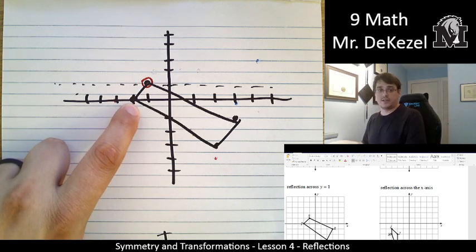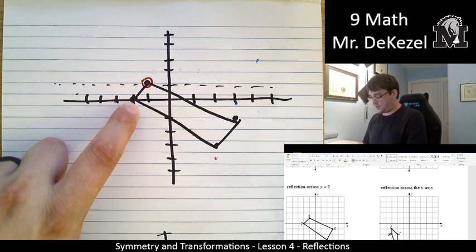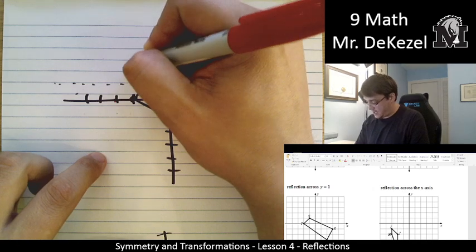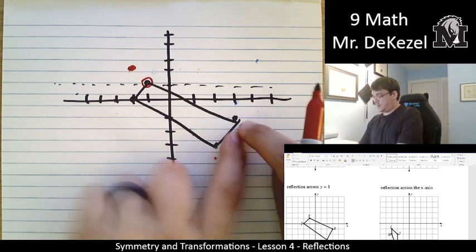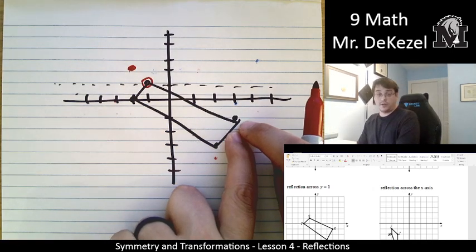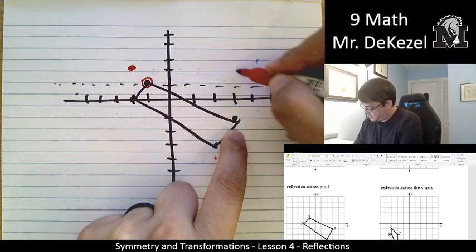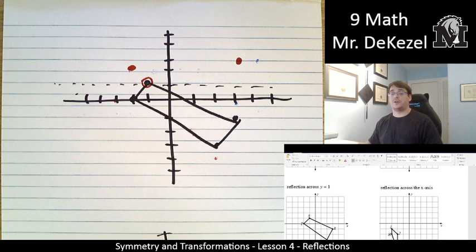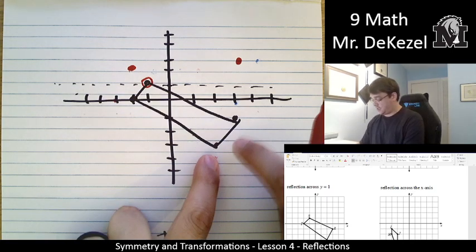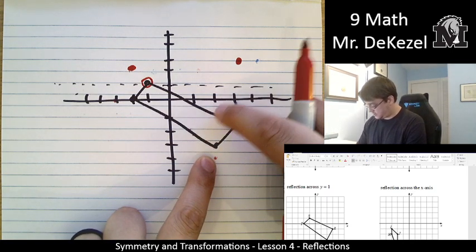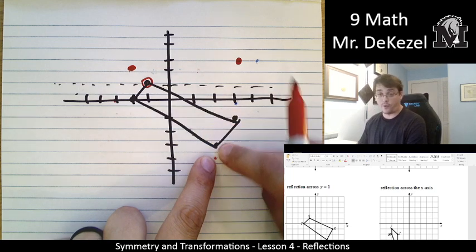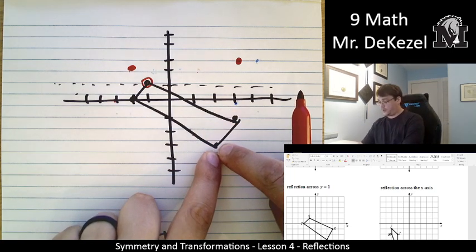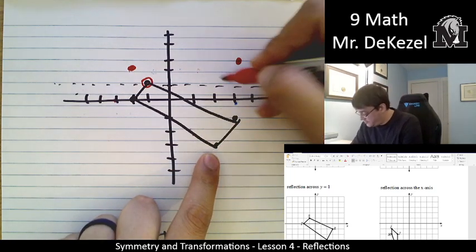This value is one below the line, so it's going to become one above the line. This one is 1, 2 below the line, so it's going to become 1, 2 above the line in the same vertical spot. Remember, we're not doing anything left to right. And this one is 1, 2, 3, 4 underneath the line, so it's going to be four above the line.